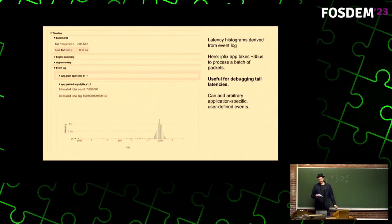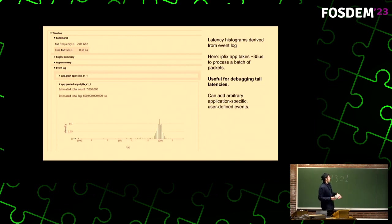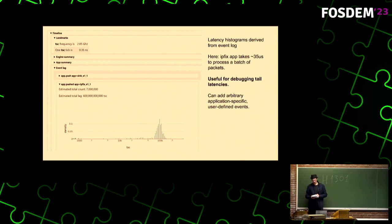Another part of the flight recorder is a high-resolution event log that gives accurate latency measurements of the pieces that make up your software. The UI shows latency histograms for individual events — some are already defined in SNAP, but you can also define new events. For example, I can tell that processing a batch of packets and extracting flow data — the main IPFIX app main loop — takes about 35 microseconds per iteration per process. This is really useful if you want to debug tail latencies, which translate basically to dropped packets in our world.